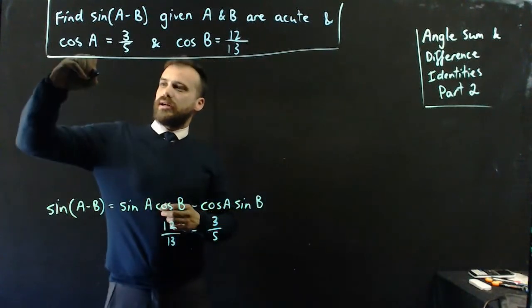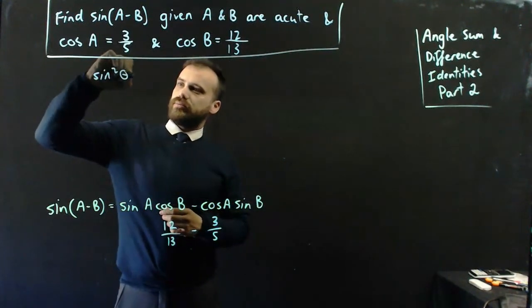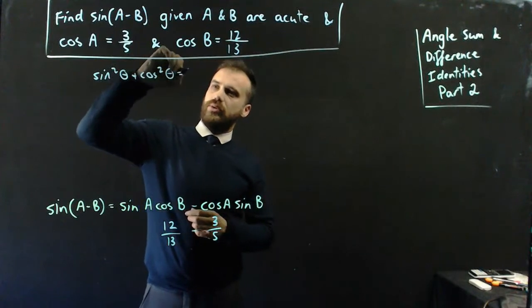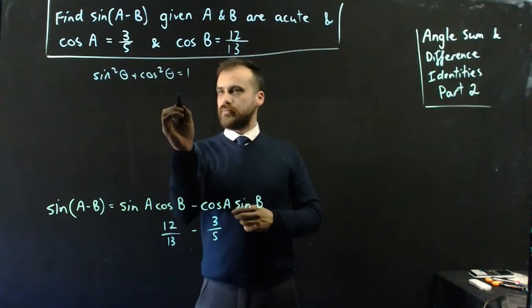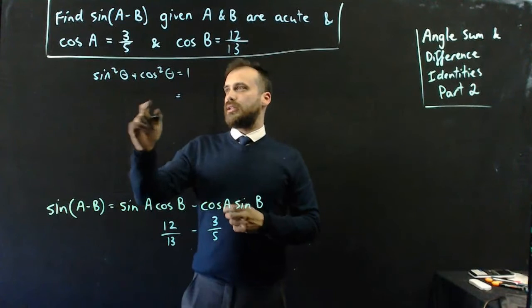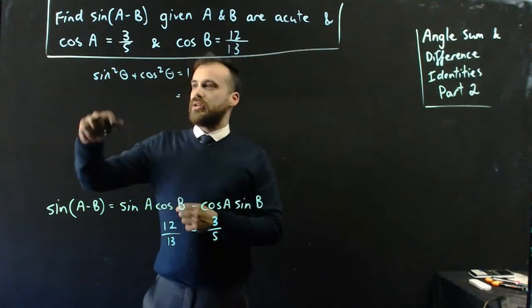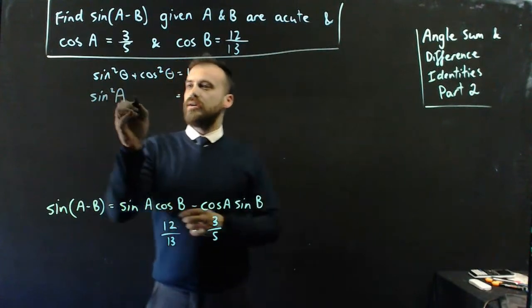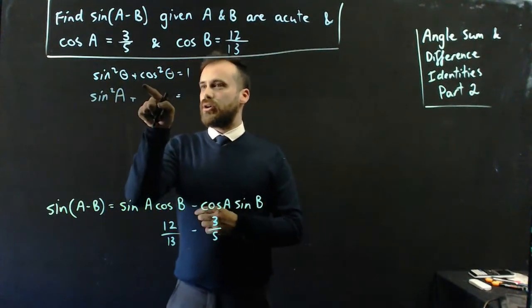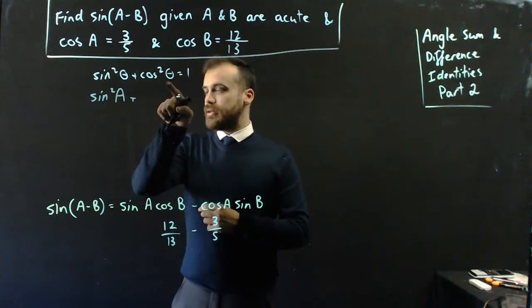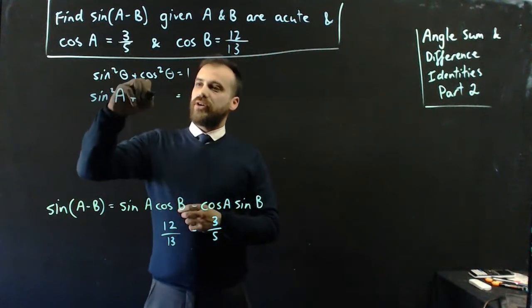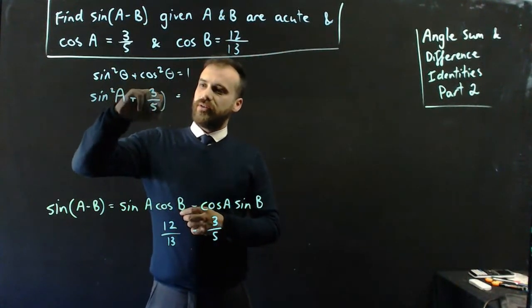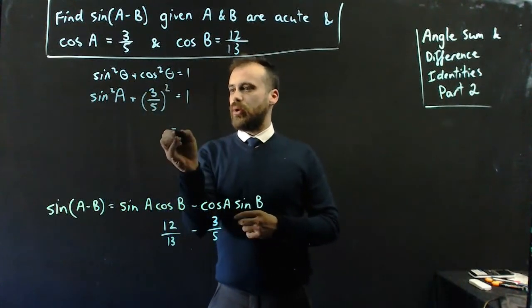So, we can say that sine squared theta plus cos squared theta equals 1. Now, we know that, let's deal with cos a first. We know that sine squared a plus cos squared a, now that's going to be 3 on 5. So, 3 on 5 squared equals 1.